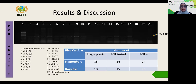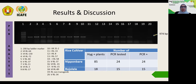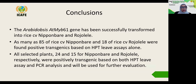The transformation efficiency of Rojolele was less effective compared to Nipponbare. This figure shows an example PCR result for the HPT gene — a positive band of 974 base pairs (approximately 1 kb) confirming the presence of the HPT gene. We analyzed 39 plants previously confirmed as expressing hygromycin phosphotransferase: 24 Nipponbare and 15 Rojolele. Based on PCR analysis, all plants positively contained the HPT gene.